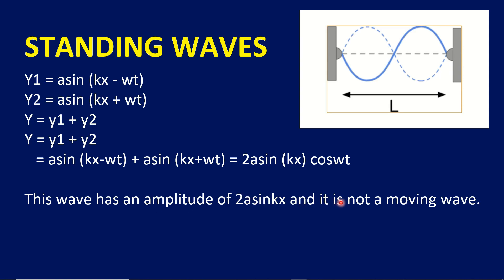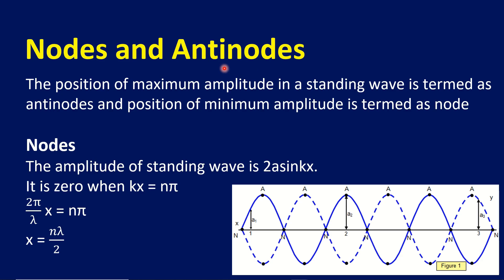This is a standing wave — it is not a moving wave. In a standing wave, the position of maximum amplitude is called an anti-node, and the position of minimum amplitude is called a node.